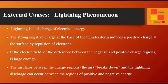The external cause is lightning. Lightning is defined as a discharge of electrical energy. The strong negative charge at the base of the thunderstorm induces a positive charge at the surface by repulsion of electrons. If the electric field — or the difference between the negative and positive charge regions — is large enough, the insulator between the charge regions, the air, breaks down, and the lightning discharge can occur between the regions of positive and negative charge.